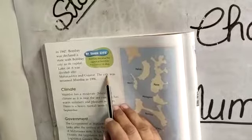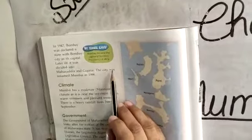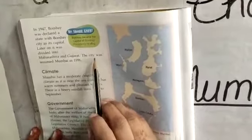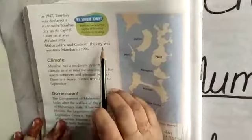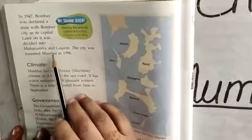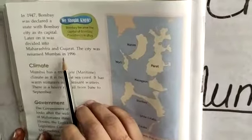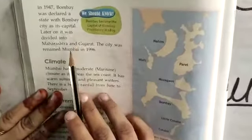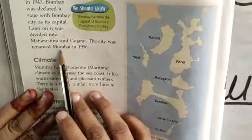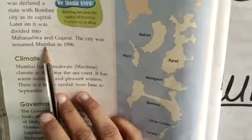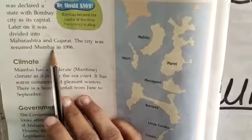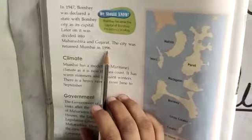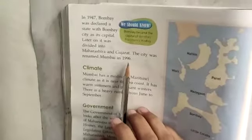The city was renamed Mumbai in 1996. Before that the name was Bombay, and in 1996 it was renamed Mumbai.